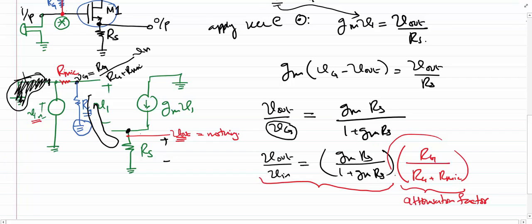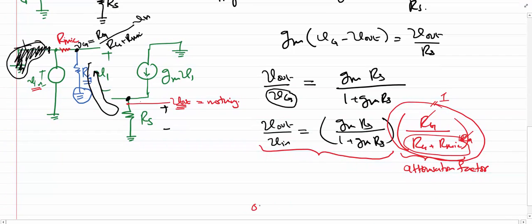How can we reduce the effect of this attenuation? We can reduce the attenuation factor if we make Rg very high compared to Rm, so that this term becomes approximately Rg and cancels out, leaving us with approximately unity. Therefore, Rg has to be very large compared to Rm. For example, if Rm is around 80 to 100 ohms, then Rg must be in the vicinity of 2 kilo ohms.